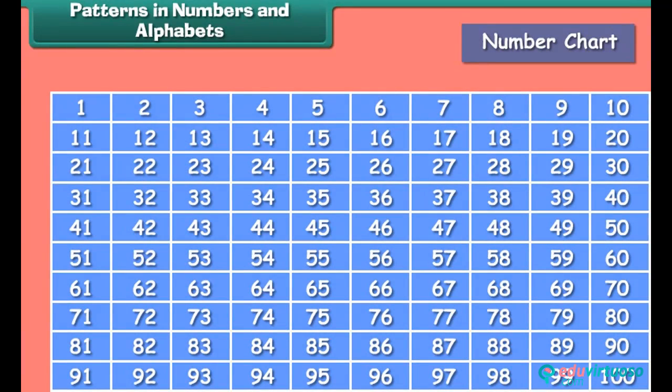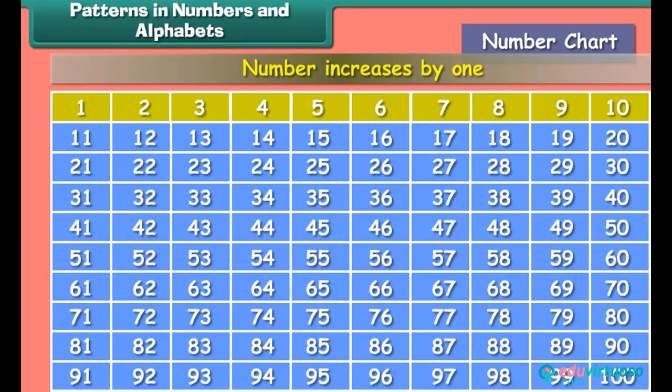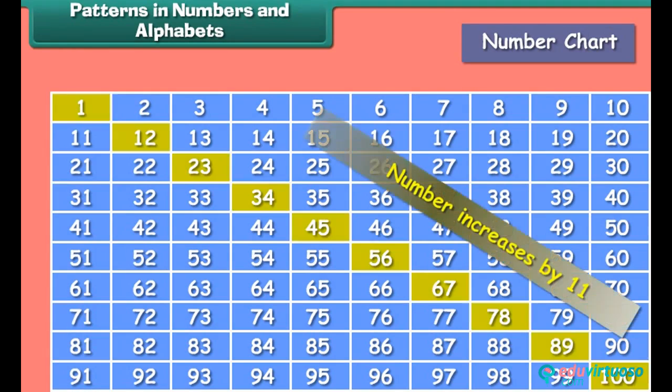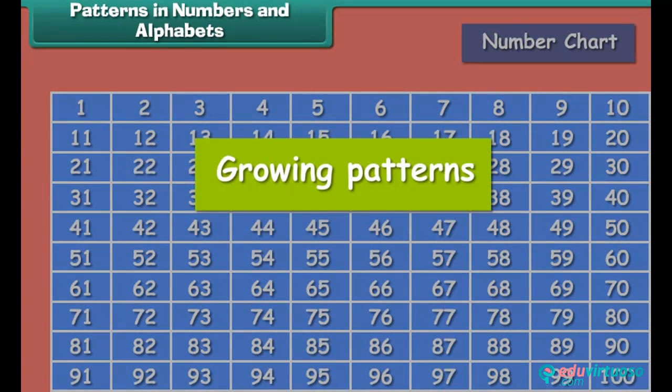Look at the number chart given here. They follow some rules. In rows, the number increases by 1. In each column, the number increases by 10. And diagonally, the number increases by 11. They are called growing patterns.